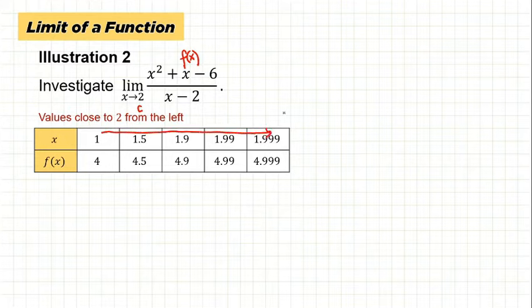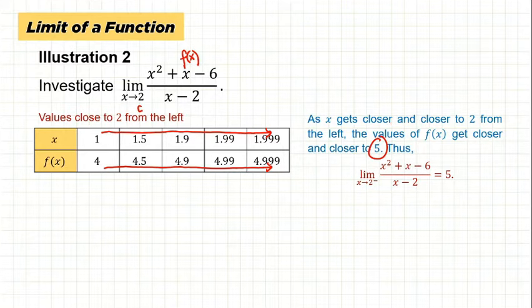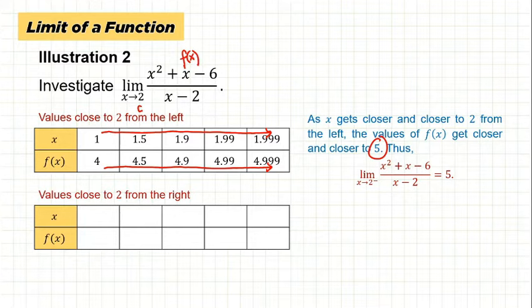As x gets closer and closer to 2 from the left, the values of the function get closer and closer to 5. So our left-hand limit is equal to 5.